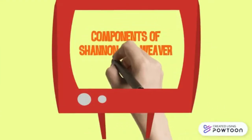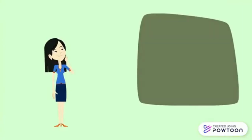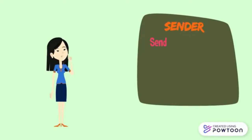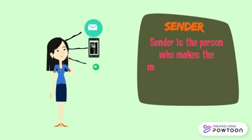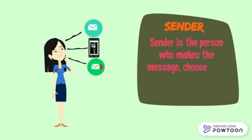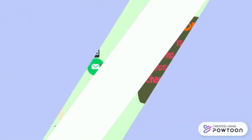Now let us discuss the various components present in the model. The very first component is the sender. The sender or communicator is the person who sends a message or an idea. He is the source and initiates the process of communication. The sender may be a speaker, a writer, or an actor.